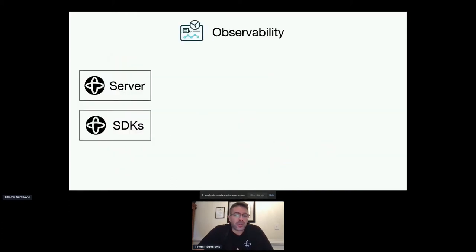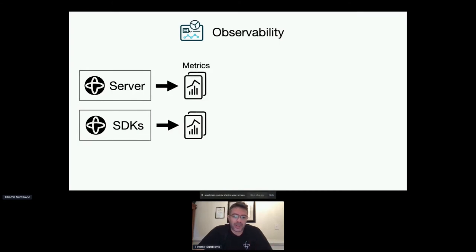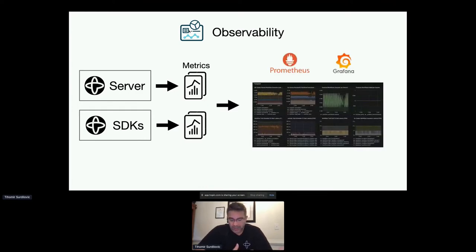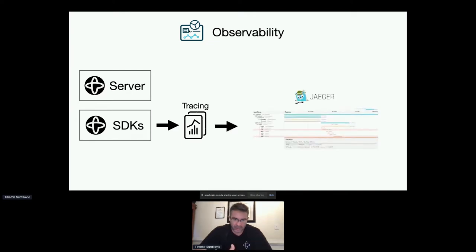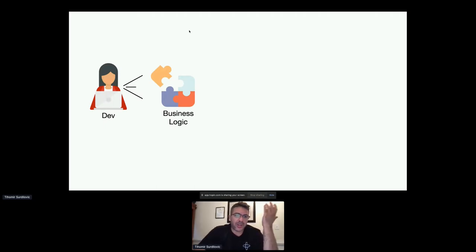For observability, the Temporal server and SDKs emit a ton of different metrics out of the box — nothing you have to set up on the server side. You can scrape these metrics with Prometheus and define dashboards with Grafana or your favorite metrics systems. In addition to metrics, the Temporal SDKs provide tracing out of the box so you can trace your application executions on things like Jaeger.